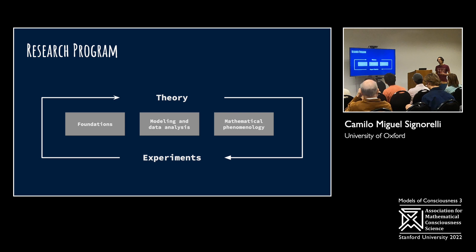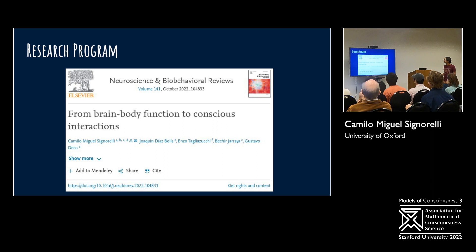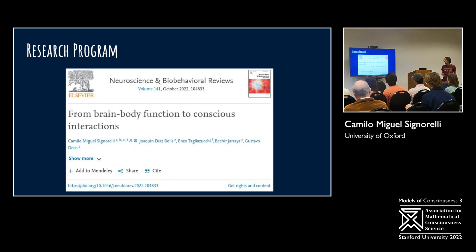We should engage with modeling, data analysis, and experiments - it's not just that we do empirical work and we don't know what happened with the modeling, or the other way around. And finally, we need to engage with a sound method to describe the phenomenology or the structure of experience. The one that I prefer is what I call mathematical phenomenology. This is a very recent paper where we mix empirical data, modeling, simulations, and also very abstract mathematics as a proof of concept.